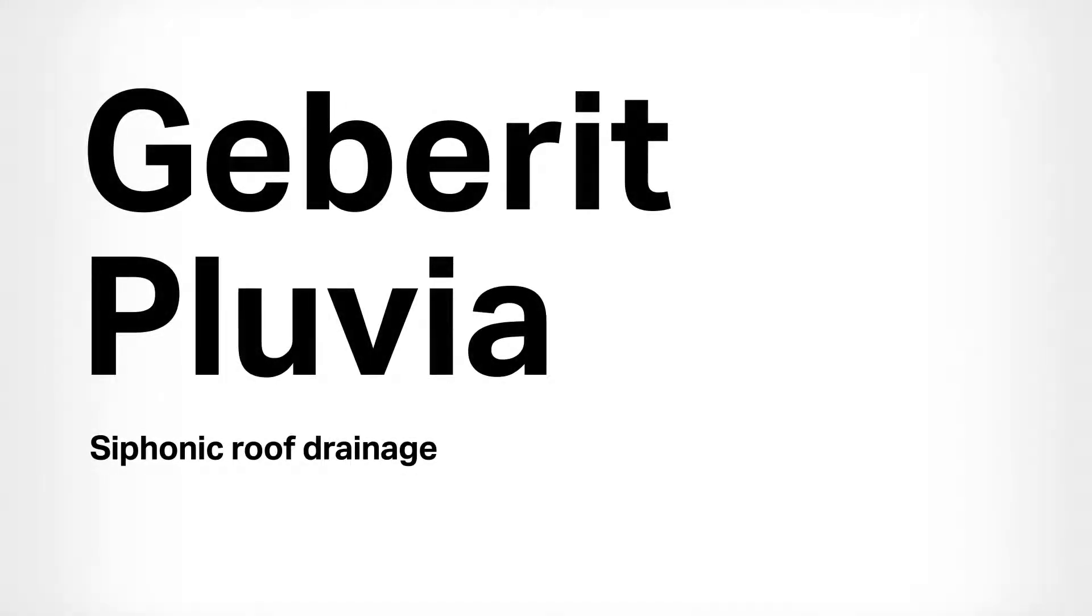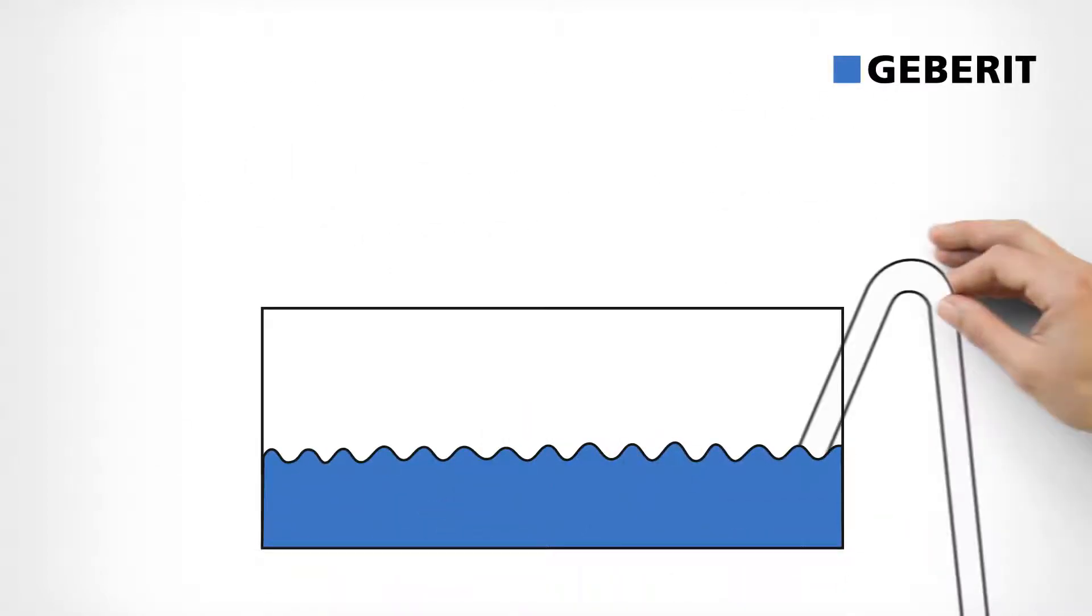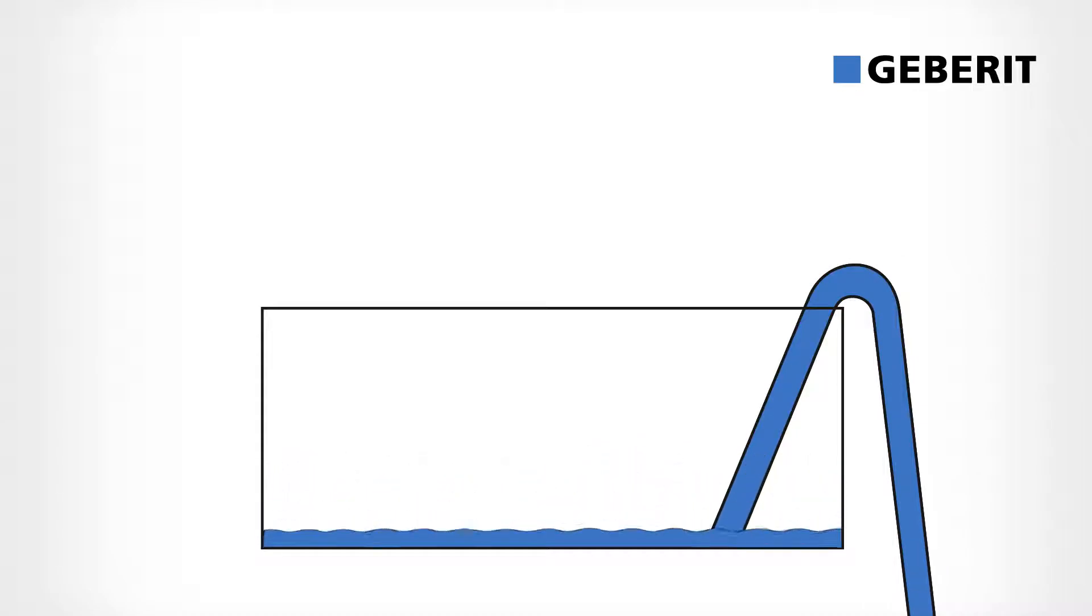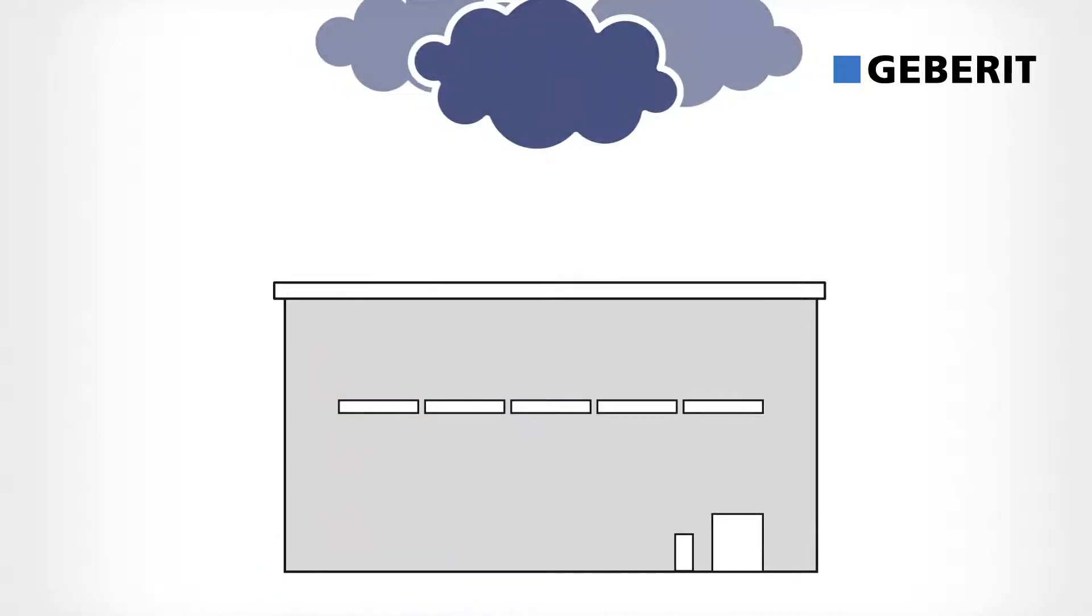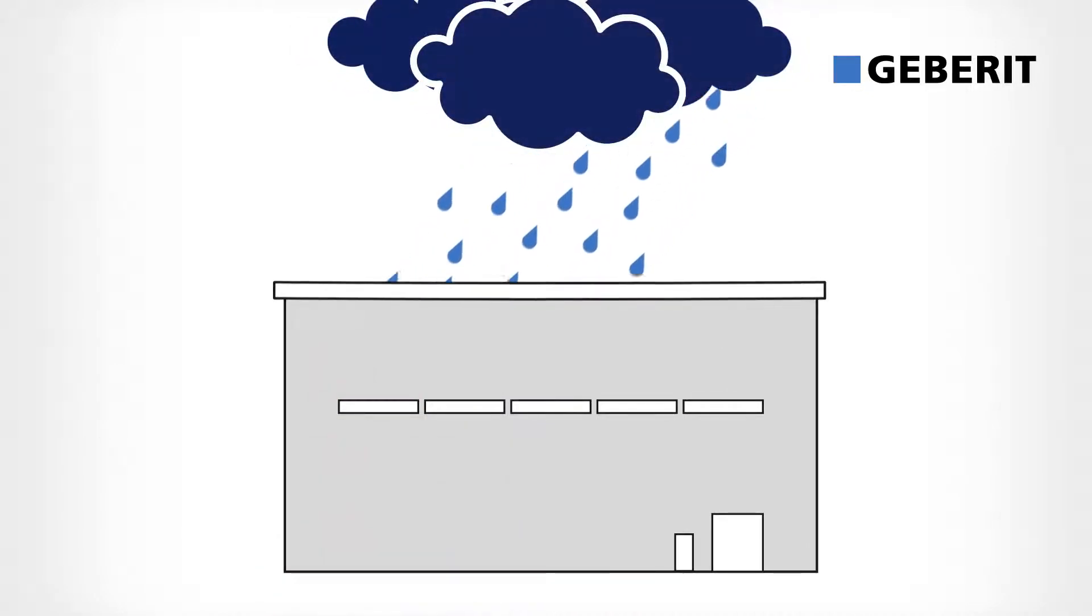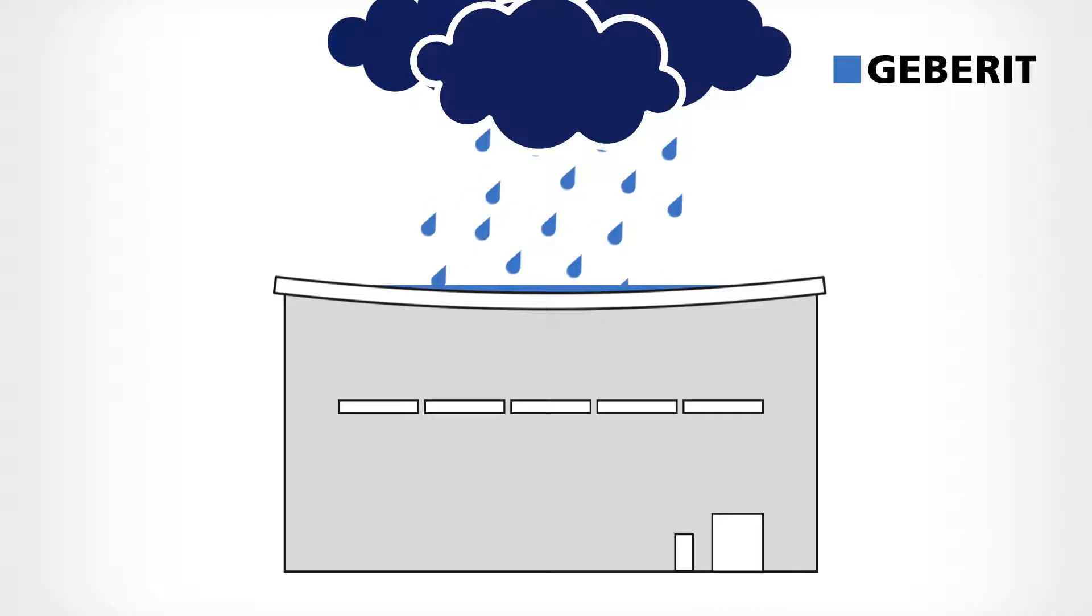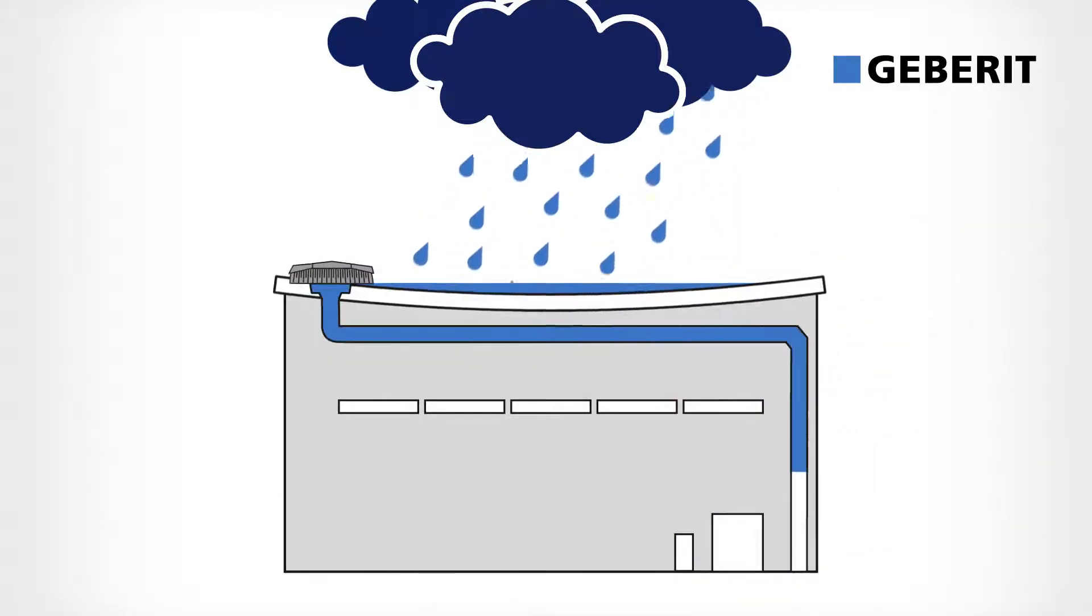Geberit Pluvia – Siphonic Roof Drainage. Drainage made easier with negative pressure. It's the principle you need for roof drainage. Because roof drainage is important.